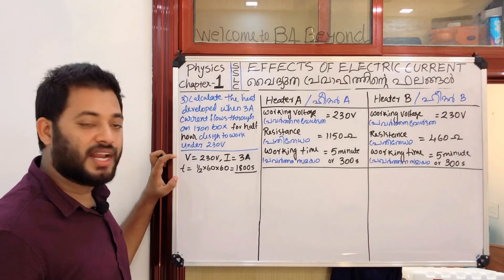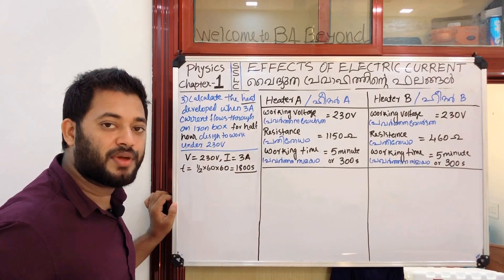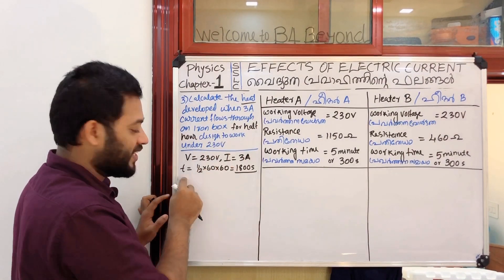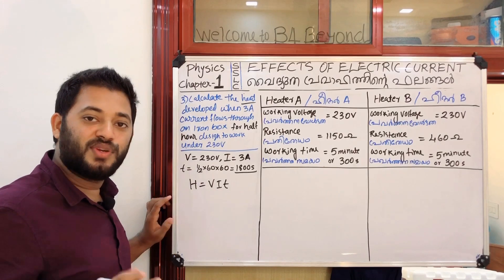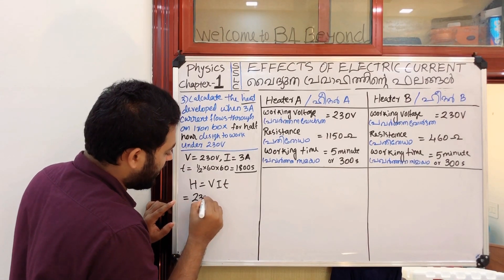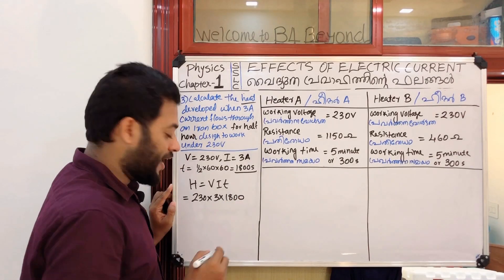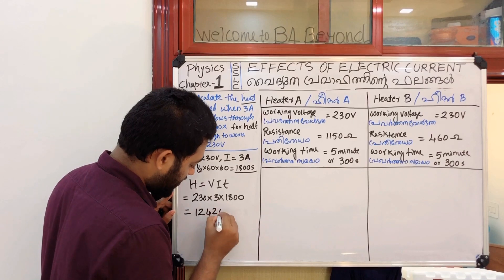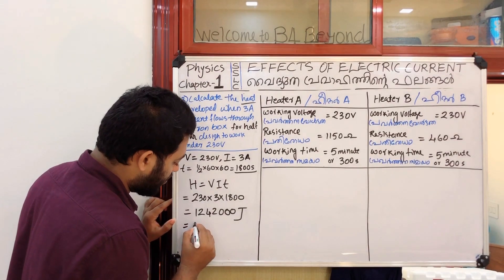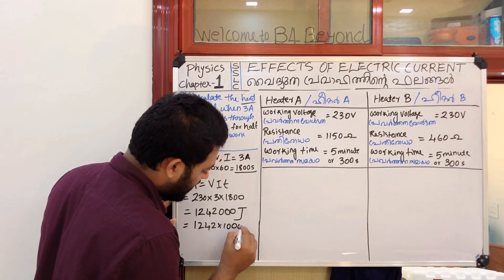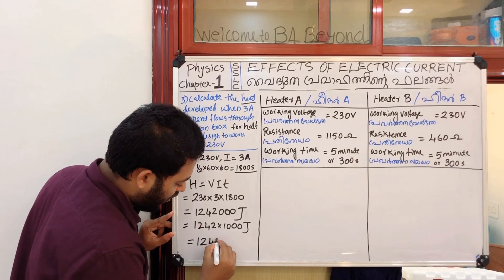We need to find H. Given data includes V, I, and T. The equation to use is H equals V into I into T. Substituting with T equal to 1800 seconds, the answer is equal to 1,242,000 joules, which equals 1242 kilojoules.